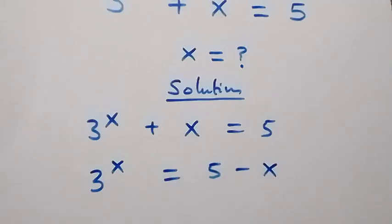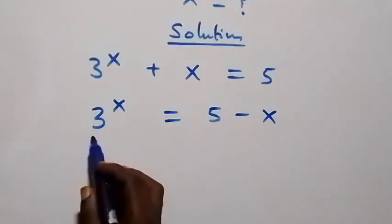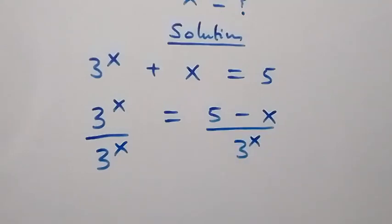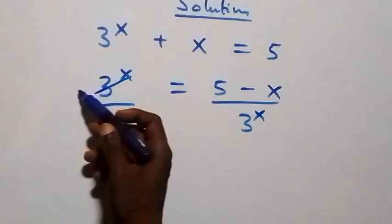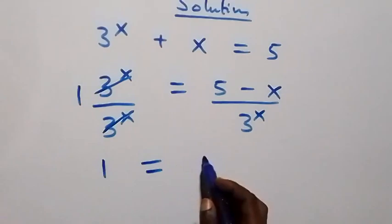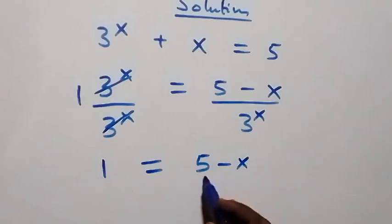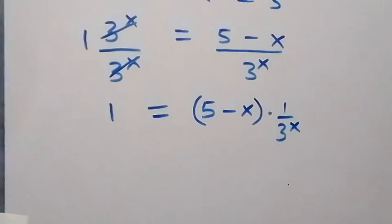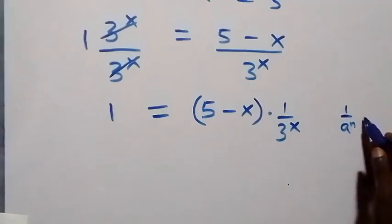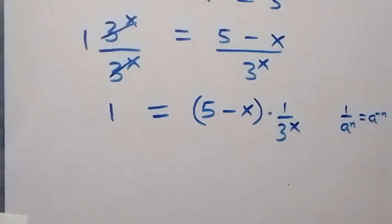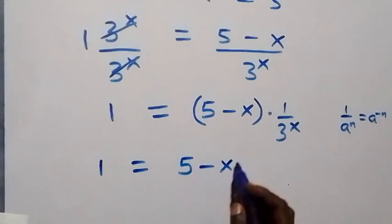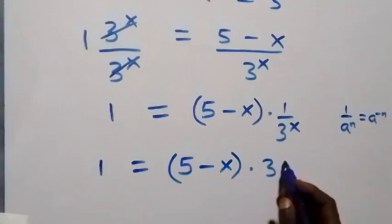Next step, we divide both sides by three raised to power x. Three raised to power x here cancels with three raised to power x, giving one. So we have one equals to five minus x over three raised to power x, which we can write as five minus x times one over three raised to power x. Since one over a raised to power n equals a raised to power minus n, we can write this as one equals to five minus x multiplied by three raised to power minus x.